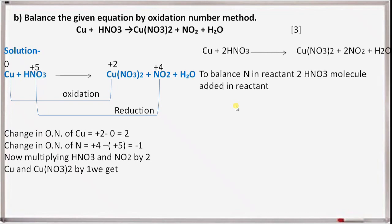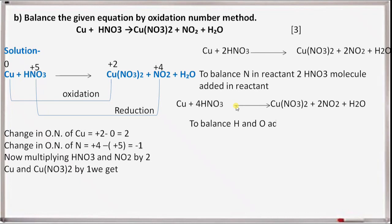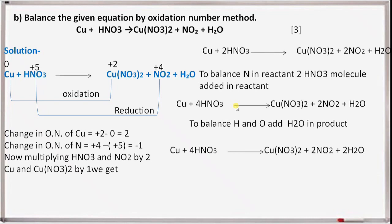We get Cu + 2HNO3 gives Cu(NO3)2 + 2NO2 + H2O. To balance nitrogen in reactants, add 2 more HNO3 molecules: Cu + 4HNO3 gives Cu(NO3)2 + 2NO2 + H2O. Now to balance hydrogen and oxygen, add H2O in product: Cu + 4HNO3 gives Cu(NO3)2 + 2NO2 + 2H2O. This is the required balanced chemical equation.